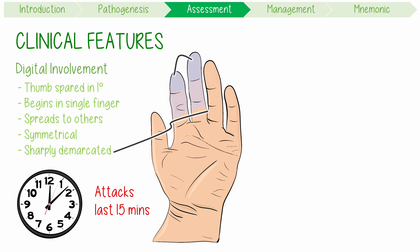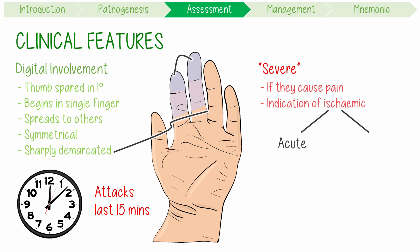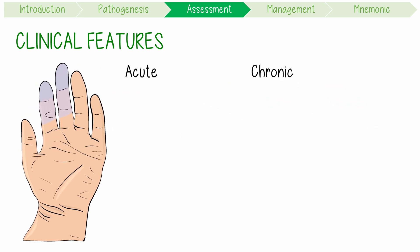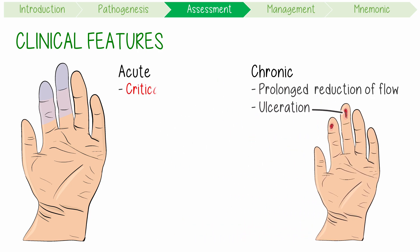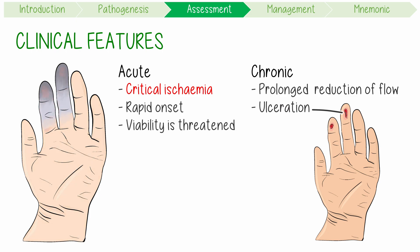Attacks can be considered severe if they cause pain, which is an indication of ischemia and can be acute or chronic. Chronic ischemia refers to tissue injury due to prolonged or progressive reduction in flow, and commonly leads to digital ulcerations. Acute ischemia, or critical digital ischemia, refers to a rapid onset attack where tissue viability is threatened.